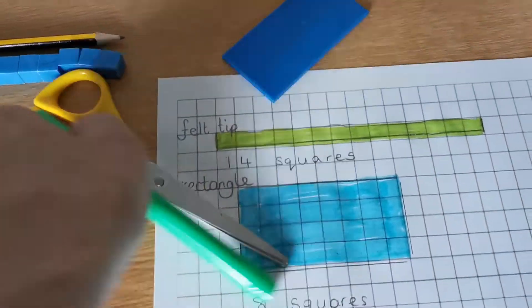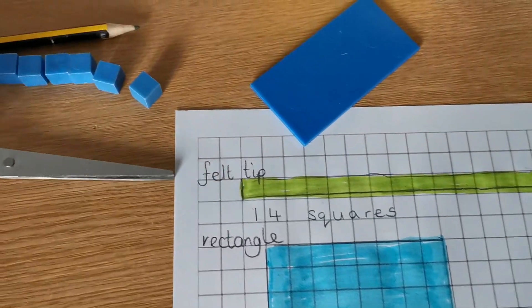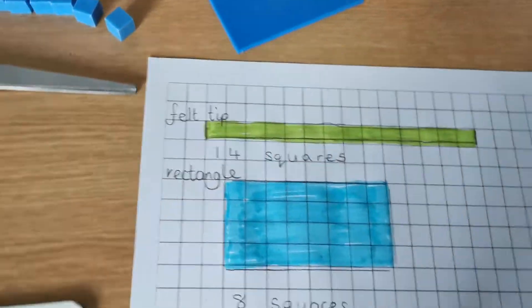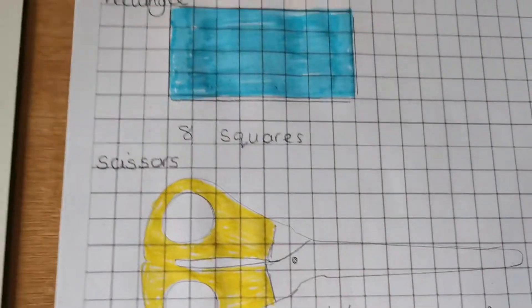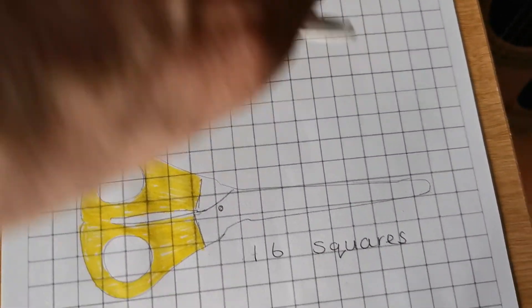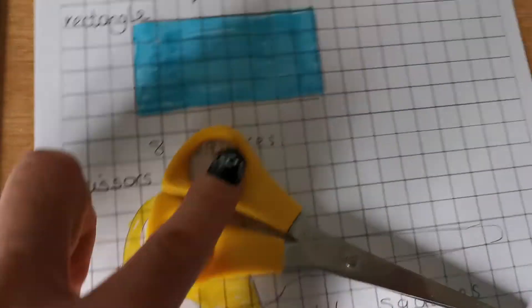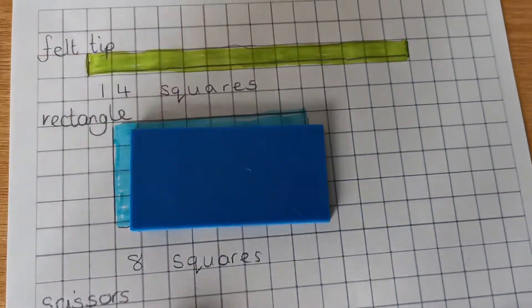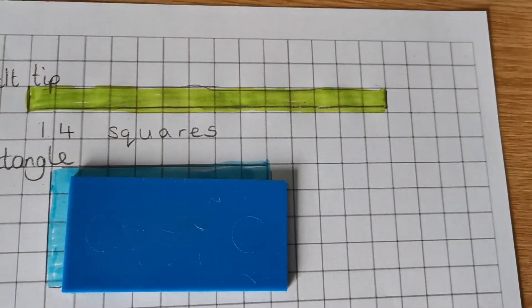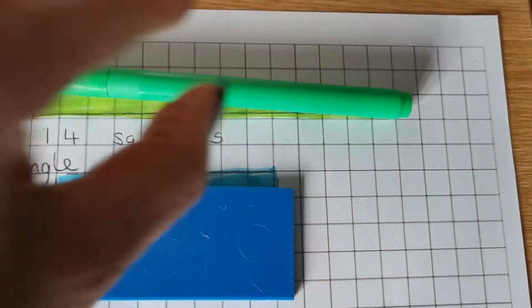So I've printed out some squared paper. And what I've done is I've chosen some objects. Now, I chose three objects. I chose a pair of scissors. I chose a rectangle out of the shape tray. And I chose a green felt tip.